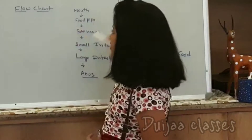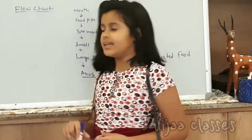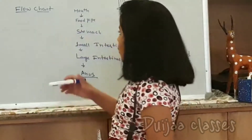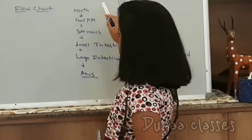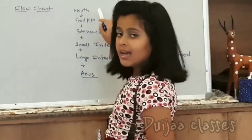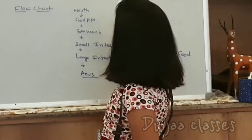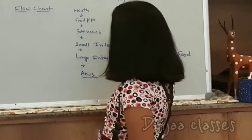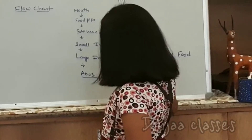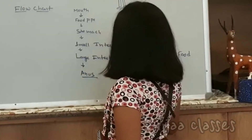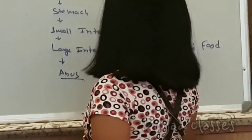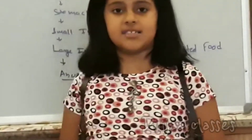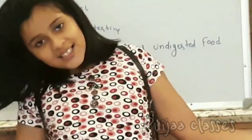By the flow chart, we can understand it very easily. When we chew food, it goes from the mouth to the food pipe, then stomach, small intestine, large intestine, and the undigested food is thrown out by the anus. Thank you.